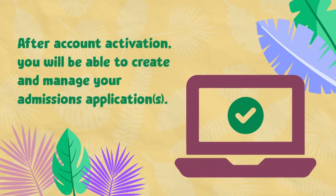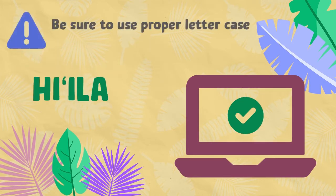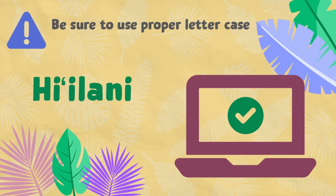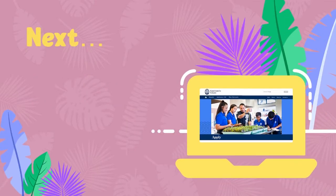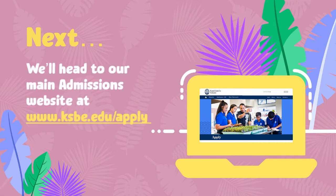After account activation, you will be able to create and manage your admissions applications. When registering, please be sure to use proper letter case — upper and lower case lettering — as our system is case sensitive. Next, we'll demonstrate the account creation and application process. To begin, we'll head to our main admissions website at www.ksbe.edu/apply.